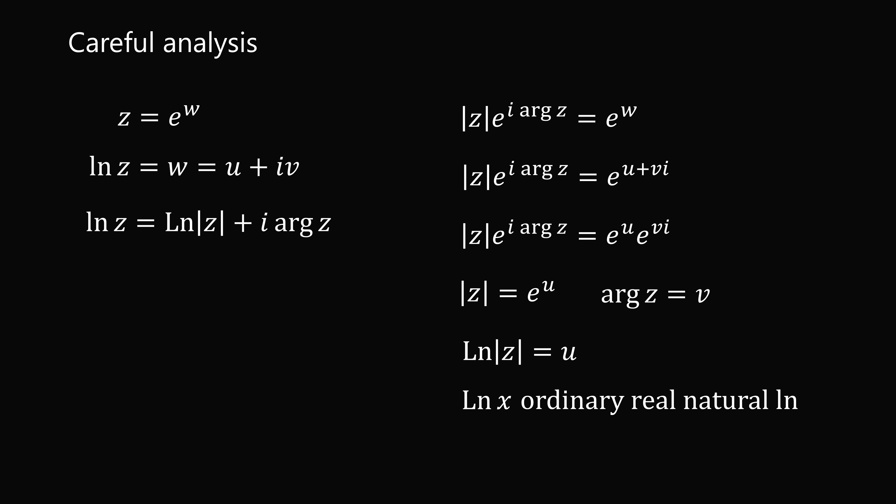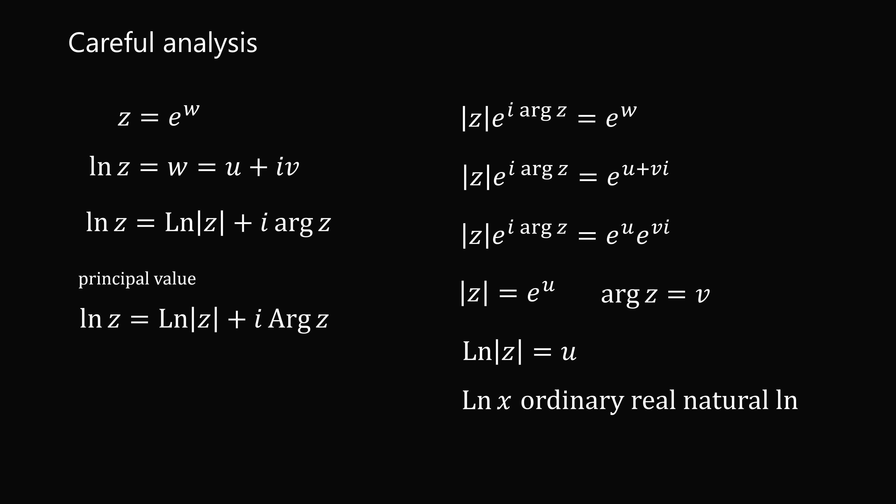This is a multi-valued result because the argument of z can be incremented by multiples of 2pi. If we want a single-valued result — which is useful when we want functions we can differentiate and check for continuity — we take the principal value: the complex logarithm of z equals Ln|z| plus i times arg(z), where the argument of z is limited to negative pi less than arg(z) less than or equal to pi.